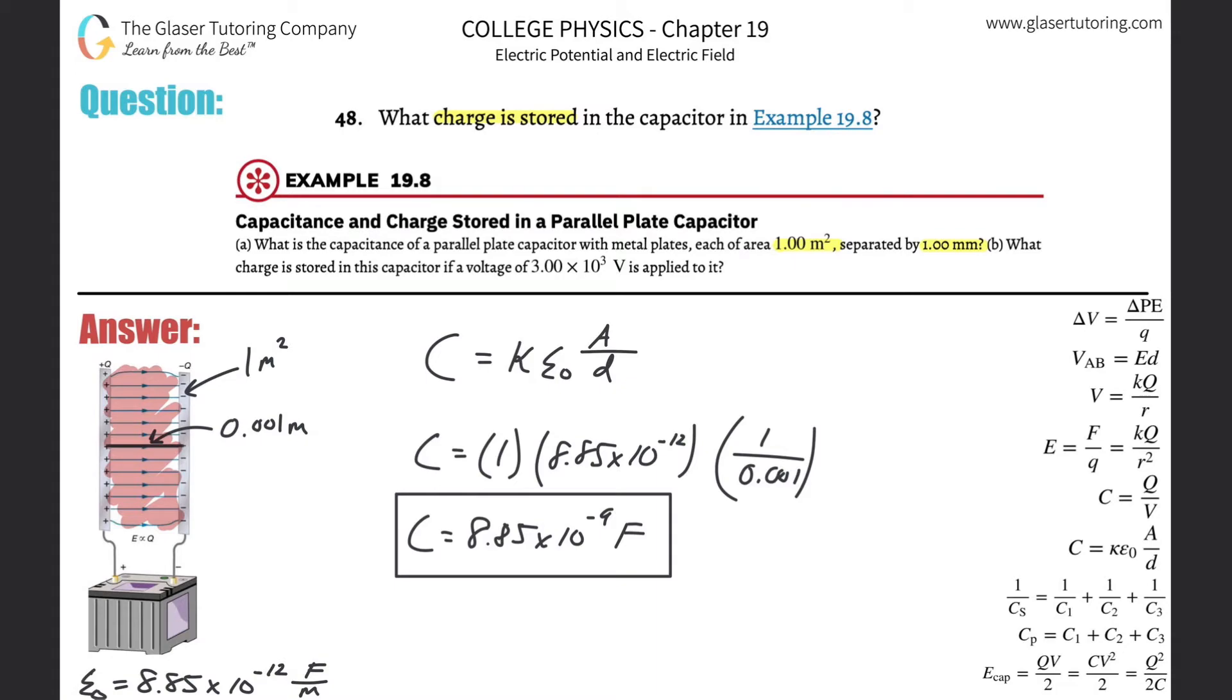The units for capacitance are in farads. Now we have to find the charge. To find the charge, you have to know how it's related to capacitance, and we have this formula: capacitance equals the charge placed across the capacitor (on the plates) divided by the voltage. We need to know the voltage. Oh look, part B says 3000 volts are being applied.